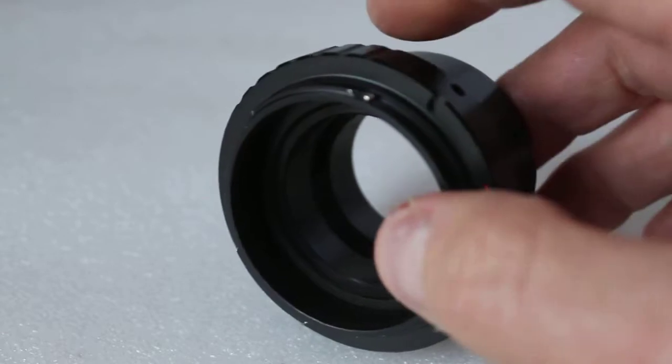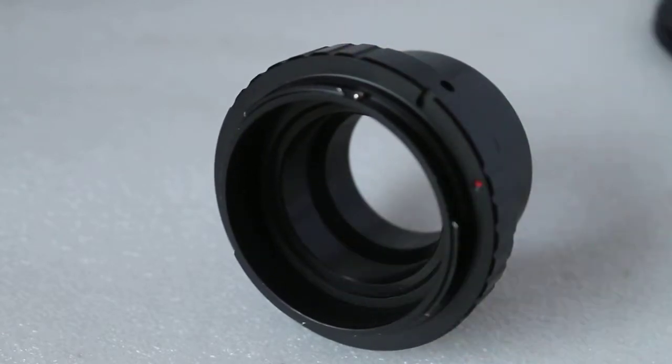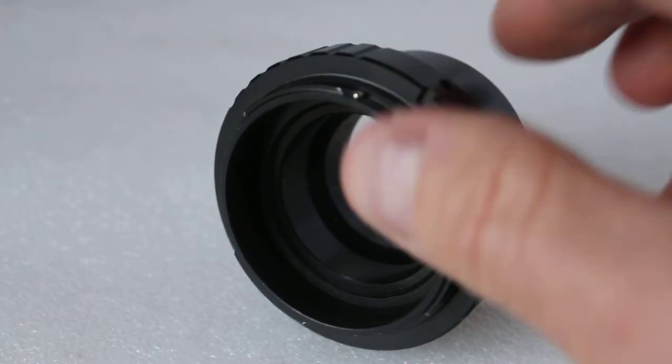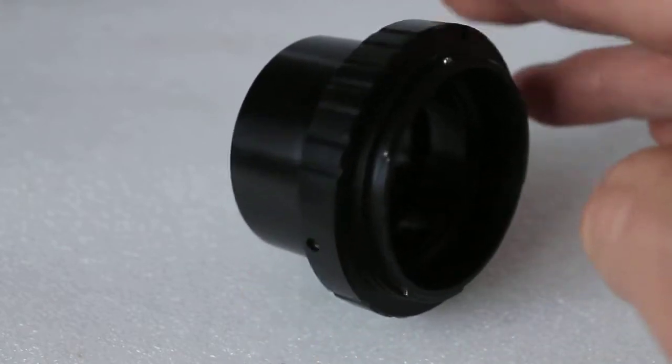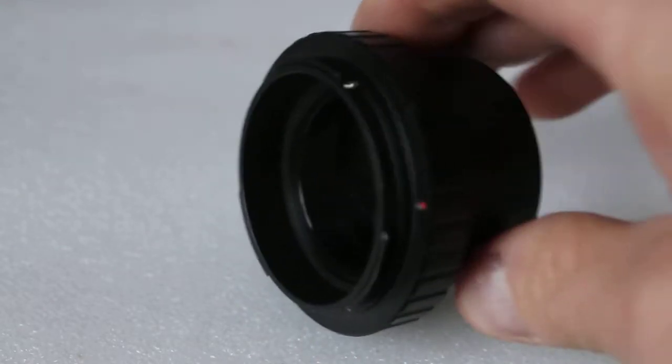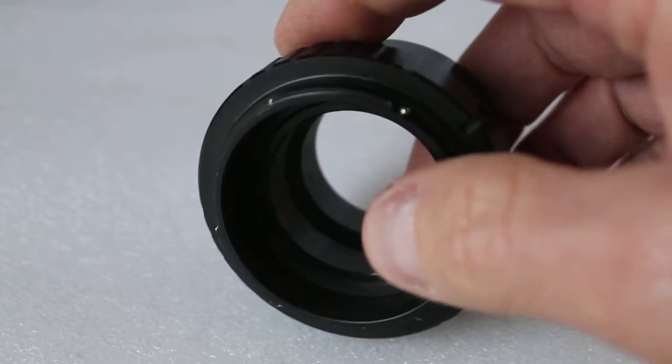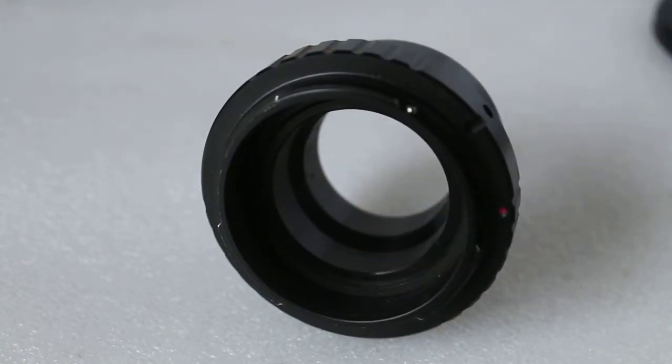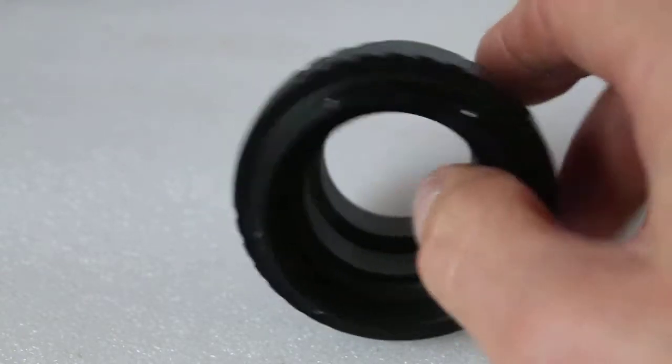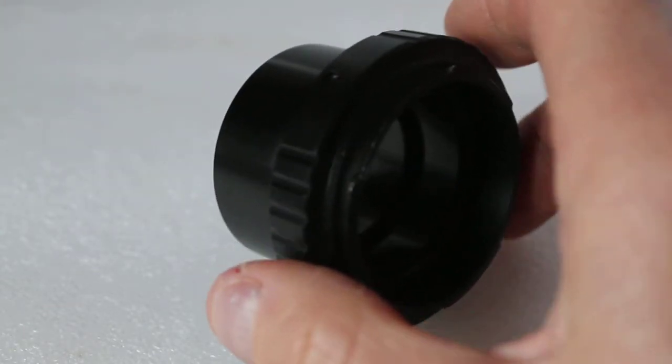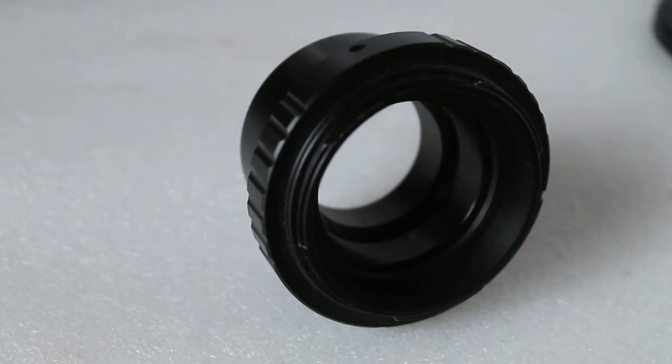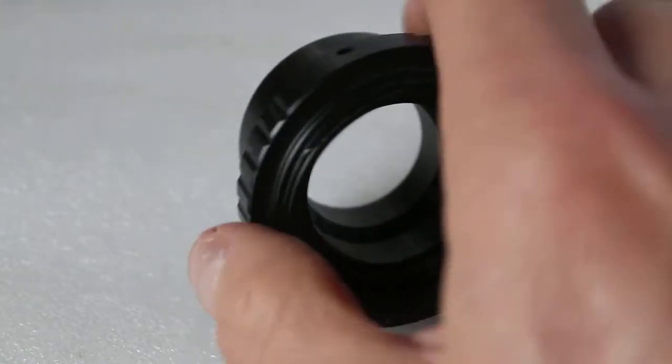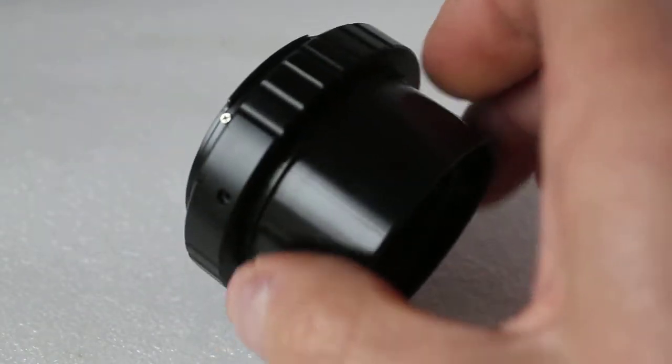That's it—the Sky-Watcher twist lock adapter with a two-inch barrel size. It either comes as a two-inch T adapter or use it as a self-centering adapter for accurate centering of eyepieces, diagonals, or as I just demonstrated, a Cheshire collimating eyepiece. It's also ideal for laser collimators.